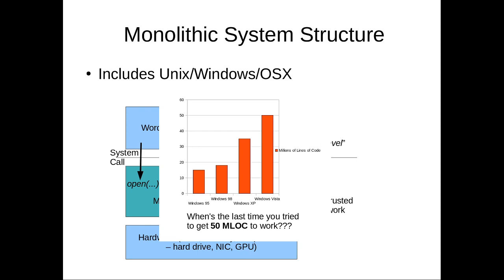A very positive aspect of the monolithic system structure is that it's very fast. The only structure is to essentially isolate applications from each other and isolate the kernel from them — effectively the minimum amount of isolation needed. They're very fast because system calls are your main overhead from that structure, and that's about it.